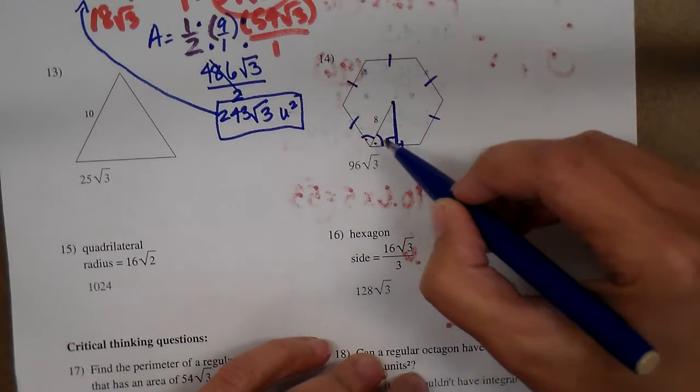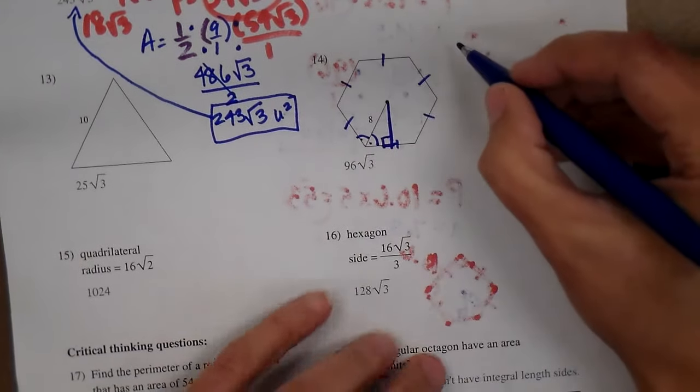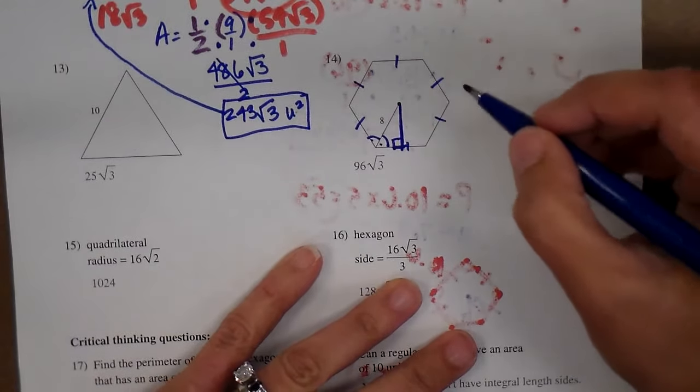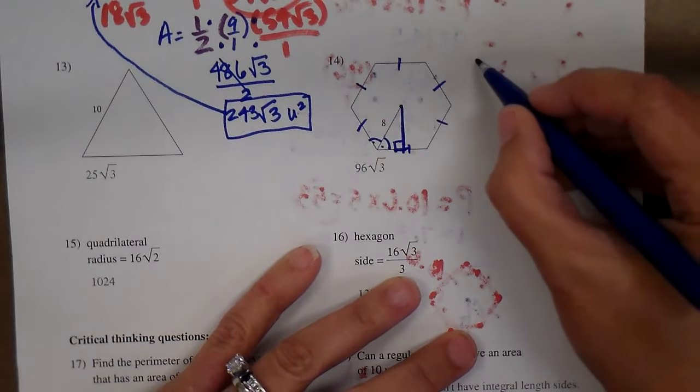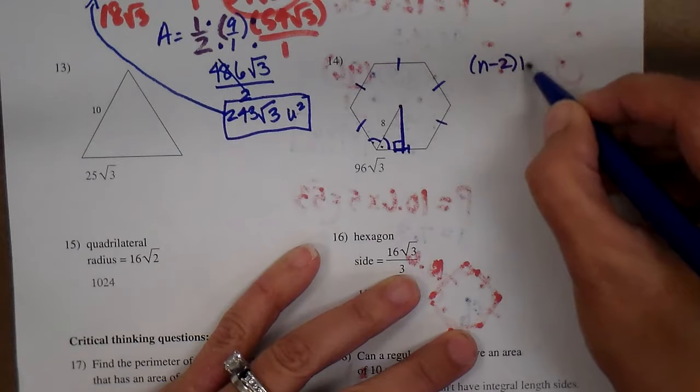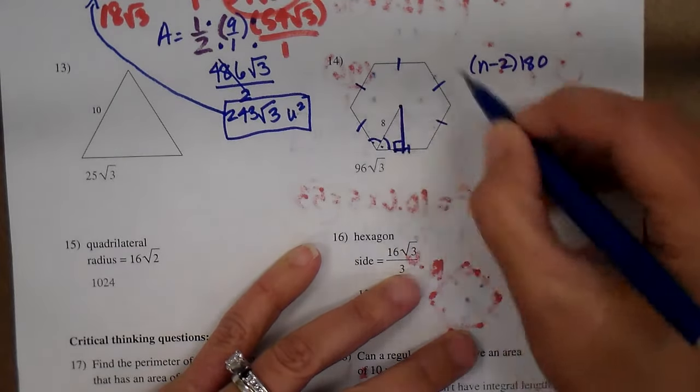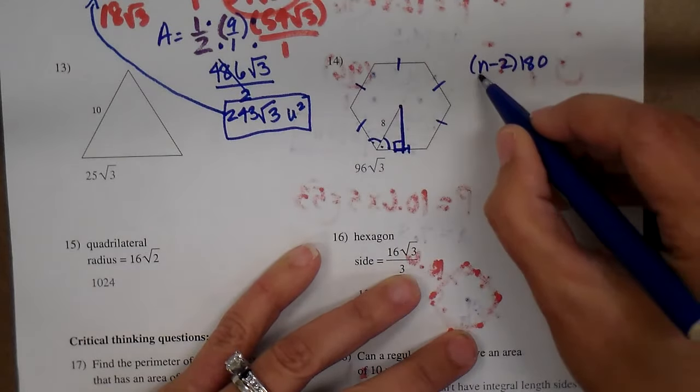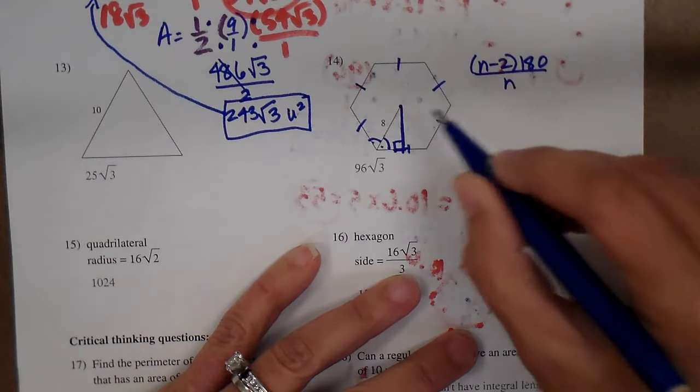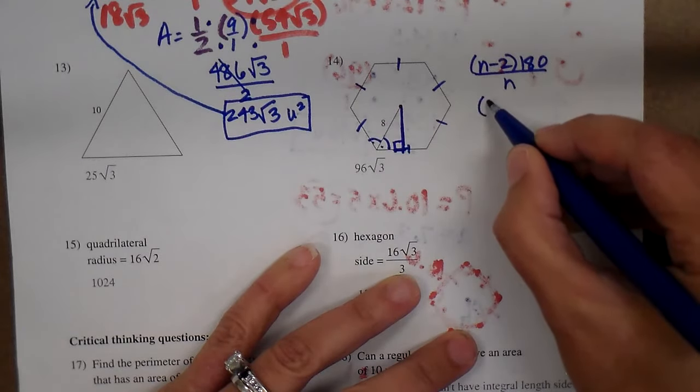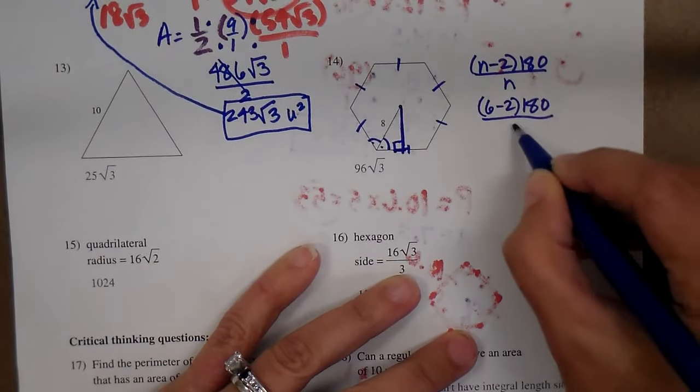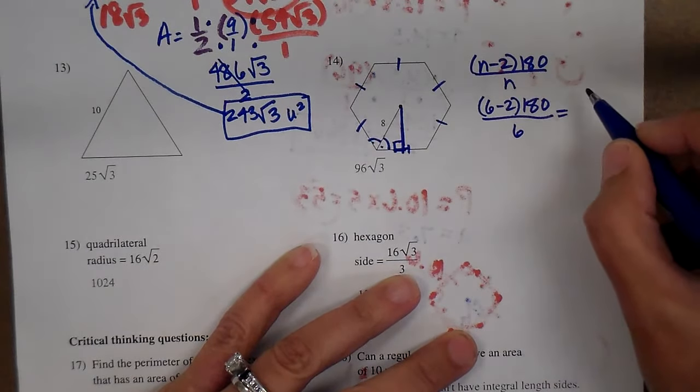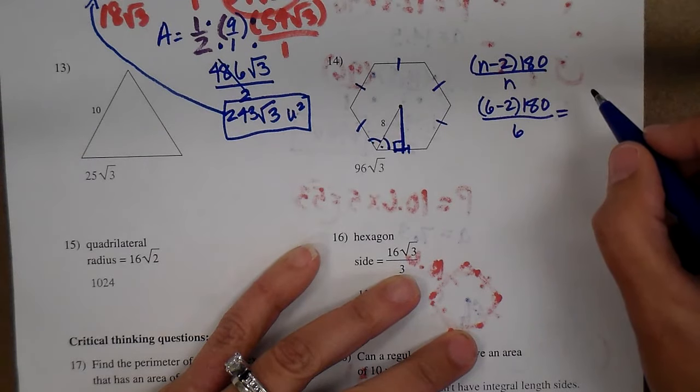First of all, I need to find out what these angles are. This being a hexagon and it being regular, all the angles are the same. I'm going to use n minus 2 times 180 to find the sum of all the angles and then divide that by n.